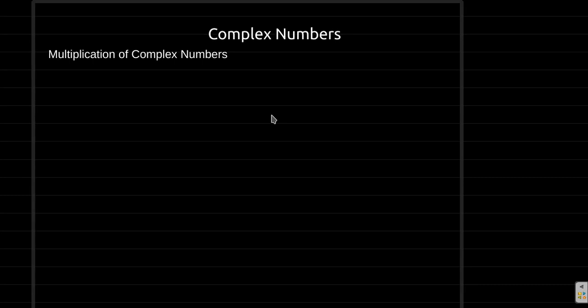Let us look at multiplication of complex numbers. As usual, we write complex numbers in the form a plus bi.